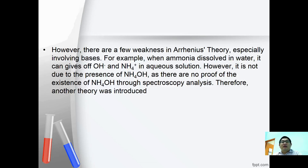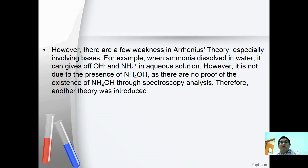However, there are a few weaknesses in Arrhenius theory, especially involving bases. For example, when ammonia is dissolved in water, it can give off hydroxide ions and ammonium ions. However, this is not due to the presence of NH4OH, as there is no proof of the existence of NH4OH through spectroscopic analysis. Therefore, another theory was introduced.